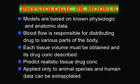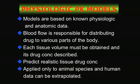Physiological PK models are based on known physiologic and anatomic data. Blood flow is responsible for getting the drug to various parts of the body. We need the volume of every tissue system — liver, kidneys, blood, muscle — and describe the drug concentration in all those tissues. These models predict realistic tissue drug concentrations, and we apply them to animal species to replicate lab measurements and then extrapolate to humans.